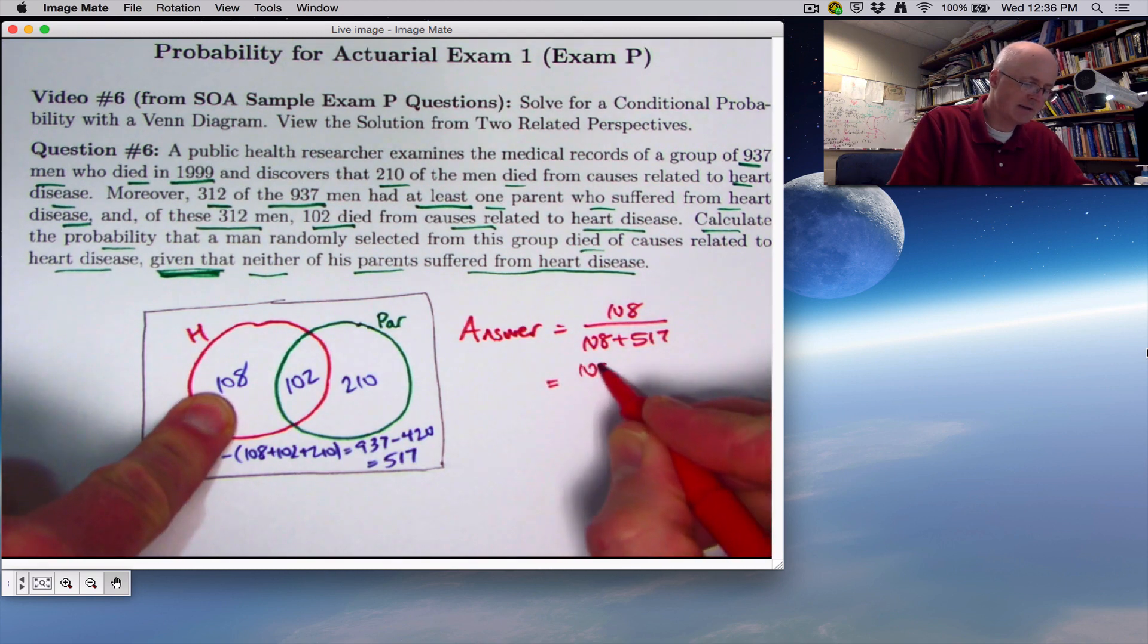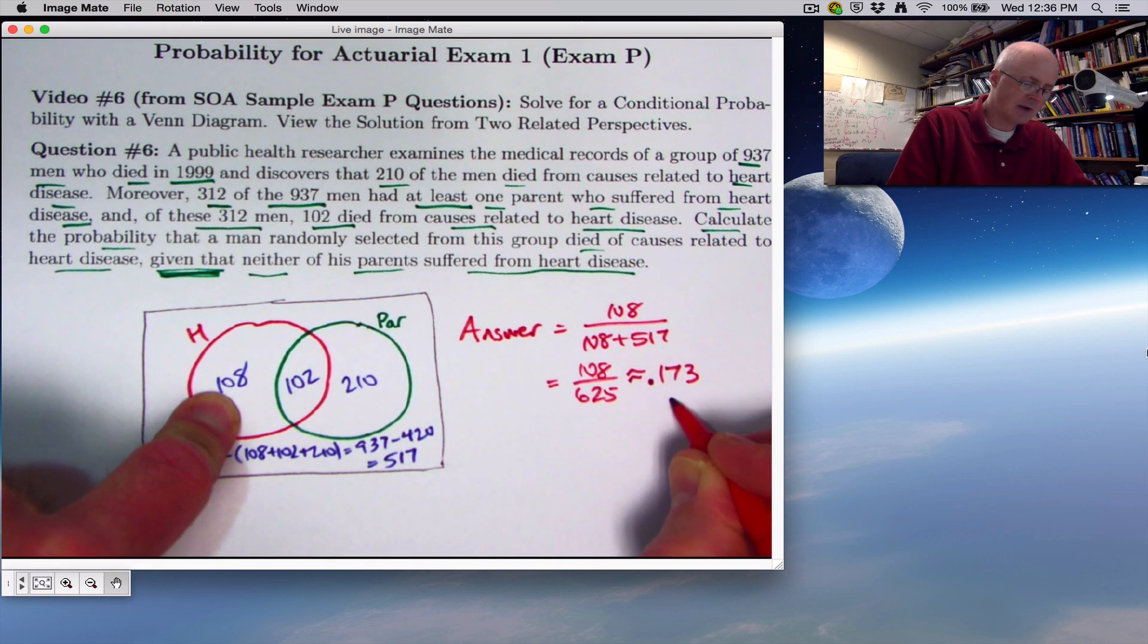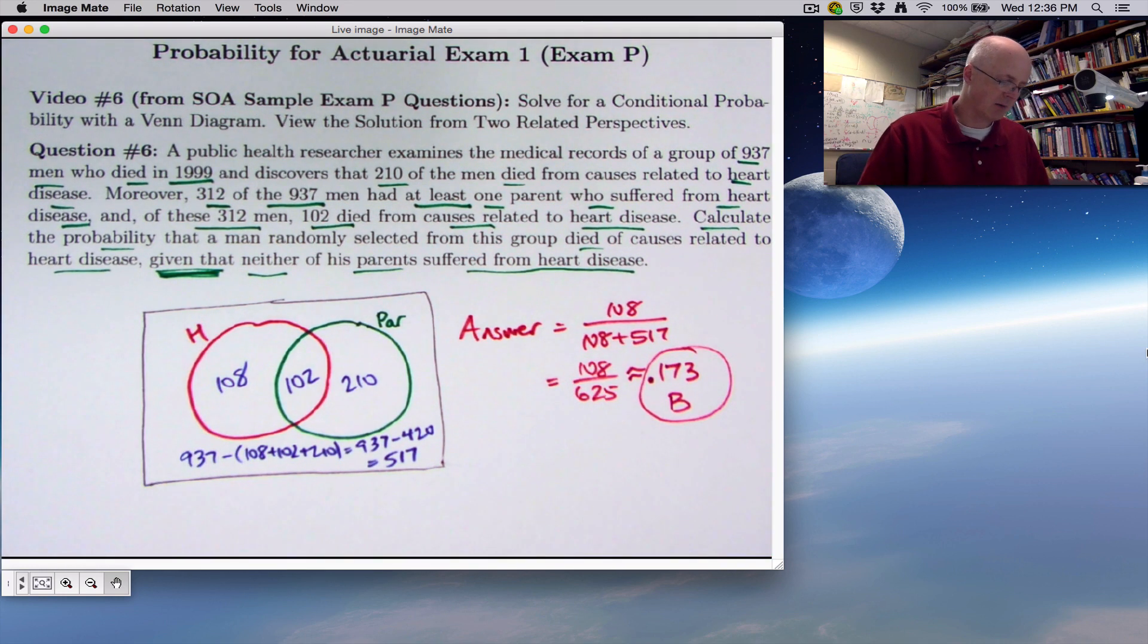So 108 divided by 625. If you get your calculator out and approximate this to three places after the decimal, you'll get 0.173, which is one of the answer options. It's option B, and that is the correct answer for the online sample problems, number six. So we solved it pretty quickly that way.